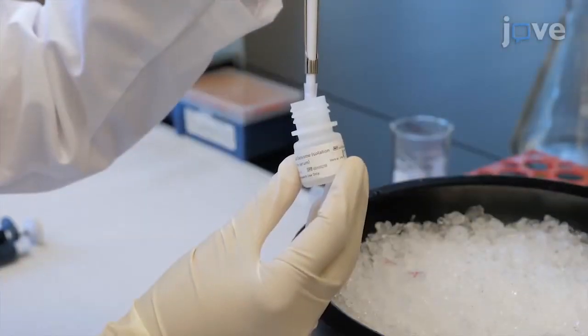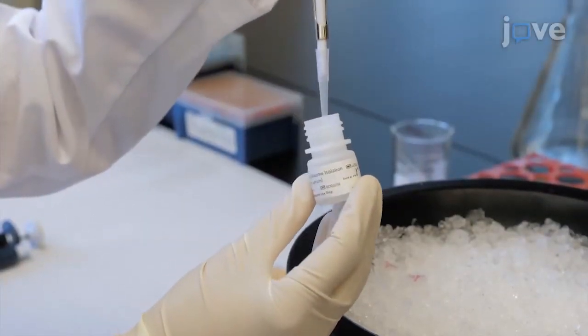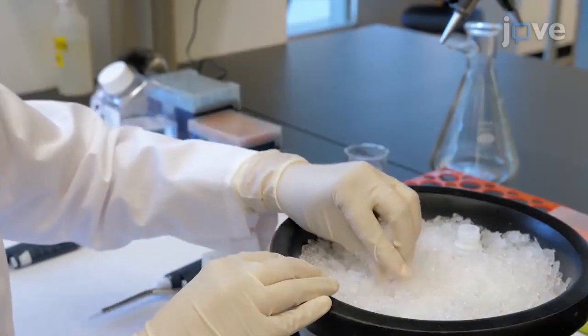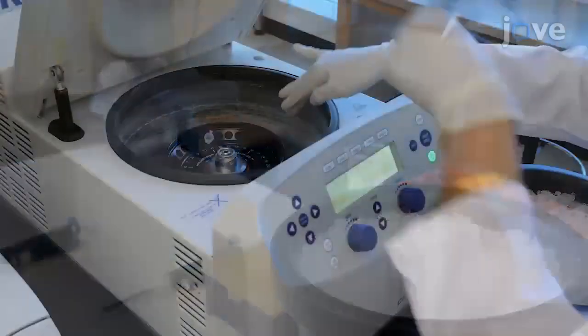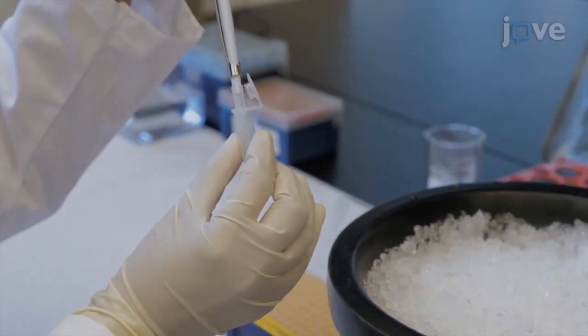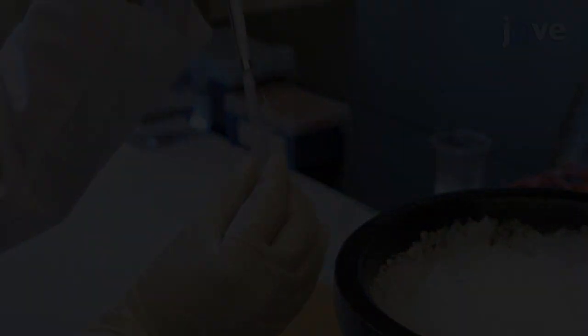Add 30 microliters of serum exosome isolation reagent to the supernatant and incubate at 4 degrees Celsius for 30 minutes. Spin at 10,000 times G for 10 minutes. Collect the EV depleted supernatant carefully without disturbing the pellet.